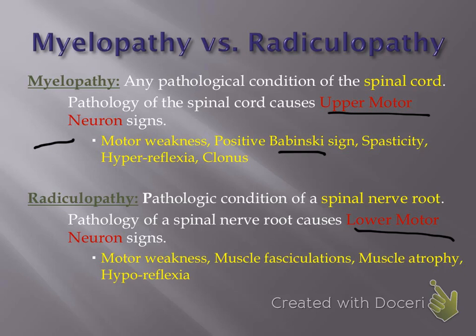A normal Babinski sign would be the toes curling down. Spasticity would be increased tone in the musculature. Hyperreflexia means the deep tendon reflexes are going to be stronger than normal — you'd be recording it as a 3 plus or 4 plus reflex. With myelopathy, it's especially evident in the lower extremity deep tendon reflexes, like the patella reflex or the Achilles reflex.